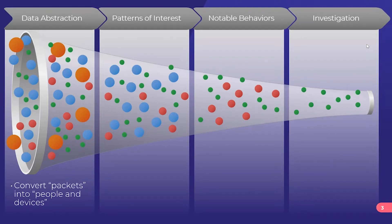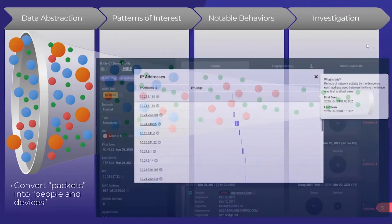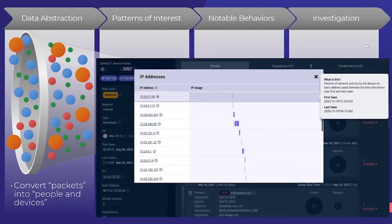AI is much more successful on the network when used in combination with other types of AI, data science, or other techniques. First and foremost, we need to take this totally unstructured data and convert it into a more normalized form. The way we do that in Awake is we convert traffic ultimately into people and devices.